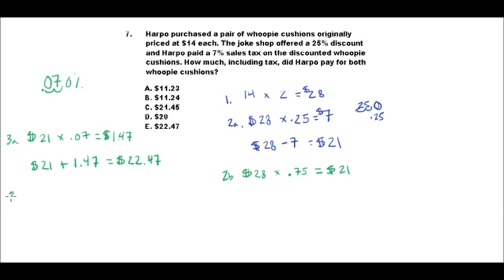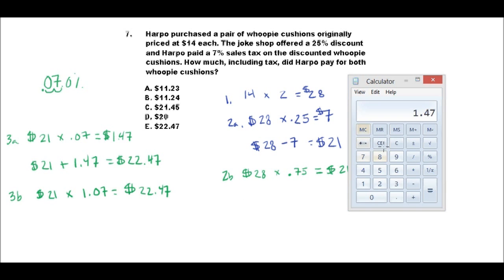But there is a way, you notice I said 3a, there is a quicker way to do it, and that's by taking 21 times .107. And that equals the same thing, that's 22.47. I'll just show you here real quick, so just to show you it really is true. 21 times .107 equals 22.47.